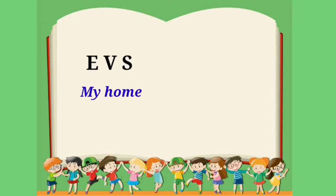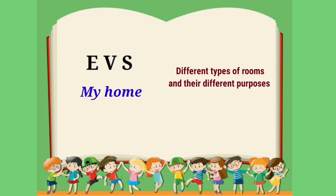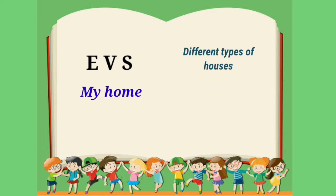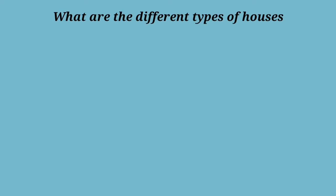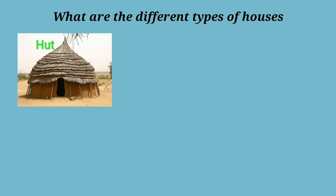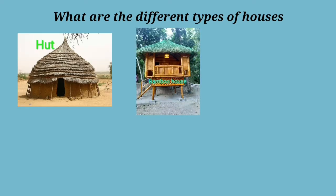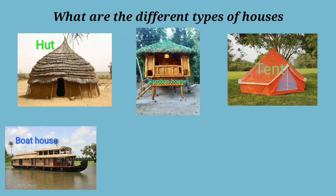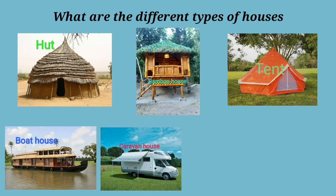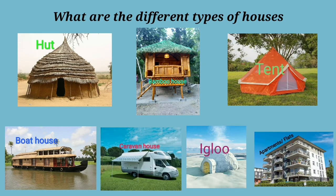Hello children, this is our EVS class. In the previous class we learned about different types of rooms and their purposes. Today I will give a brief talk about different types of houses and why we need to know our address. The different types of houses we have are: hut, bamboo house, tent house, houseboat, caravan, igloo, and buildings.